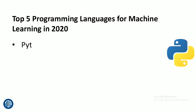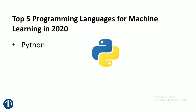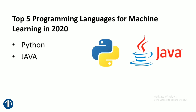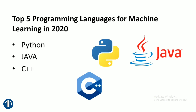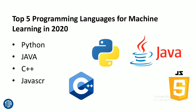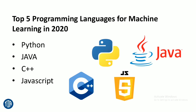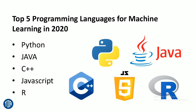Now let's see the top 5 programming languages for machine learning in 2020. First comes Python, then Java, C++, JavaScript, and R.